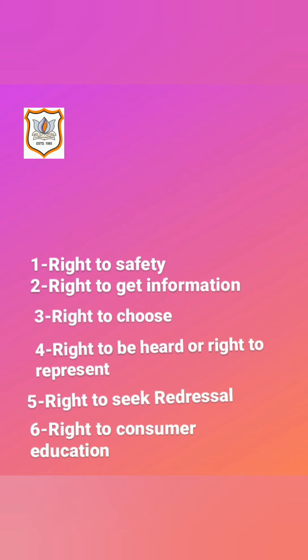The next right is the right to get information. Consumers must be provided complete information about the quality, purity, price, quantity, and standard of goods and services. The third right is the right to choose — consumers have the right to make a choice from a variety of goods and services as per their purchasing power and preference.